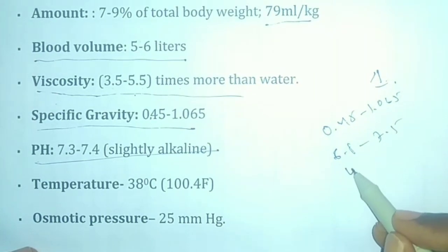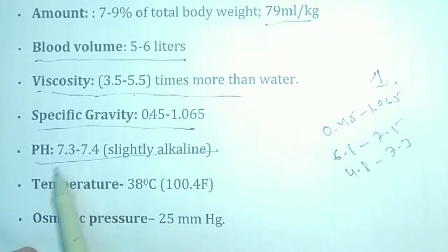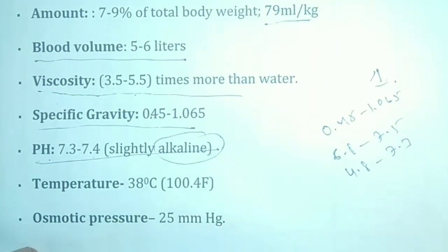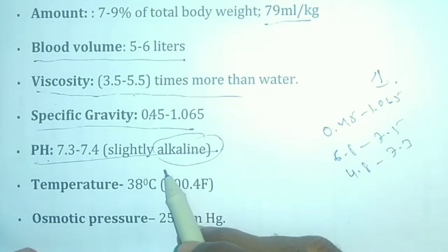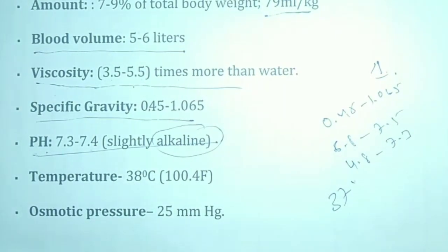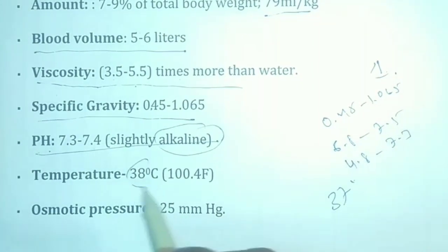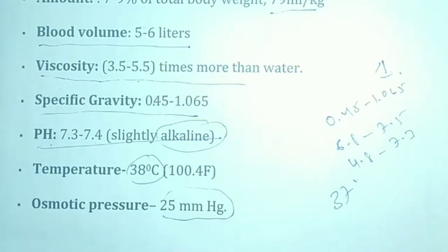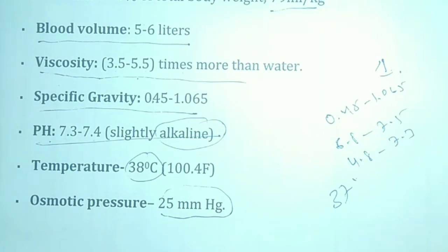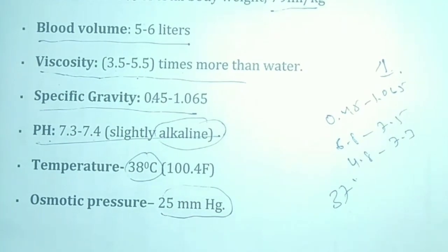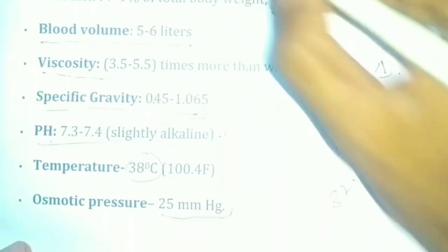The pH value of the blood is 7.3 to 7.4 — it is slightly alkaline. The body temperature is 37 to 38 degrees Celsius. The osmotic pressure is 25 mmHg, which helps pump the heart and circulate blood. These are the properties of the blood.